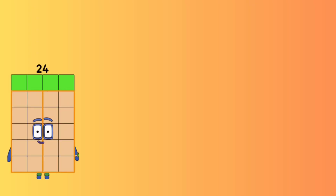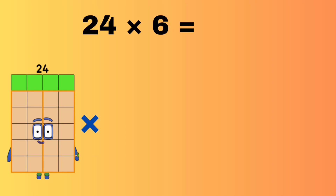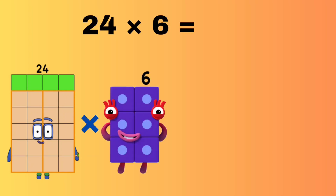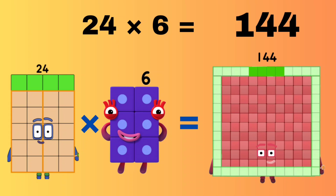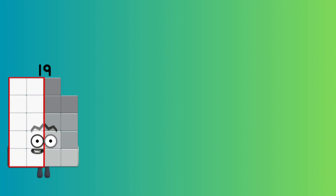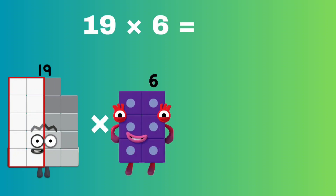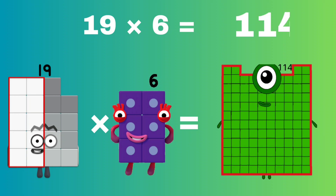24 multiplied by 6 equals 144. 19 multiplied by 6 equals 114.